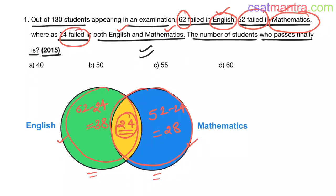Now, in total, how many students failed? That is 38 plus 24 plus 28. That is equal to 90.